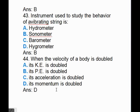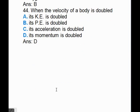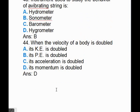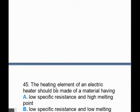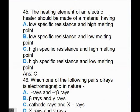When the velocity of a body is doubled, its momentum is doubled. The answer is D, its momentum is doubled. The heating element of an electric heater should be made of a material having, answer is C, high specific resistance and high melting point.